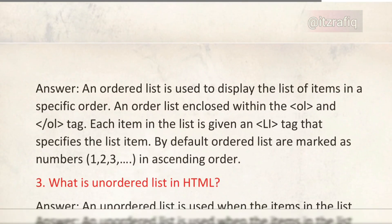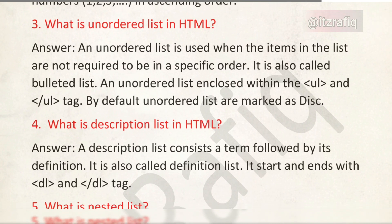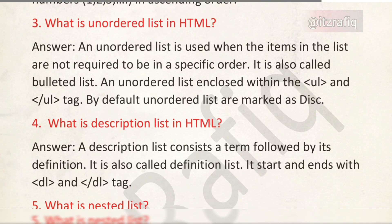Number two: what is an ordered list in HTML? An ordered list is used to display list items in a specific order. An ordered list is enclosed within the ol tag, and each item in the list is given an li tag that specifies the list item. By default, ordered lists are marked as numbers 1, 2, 3 in ascending order.